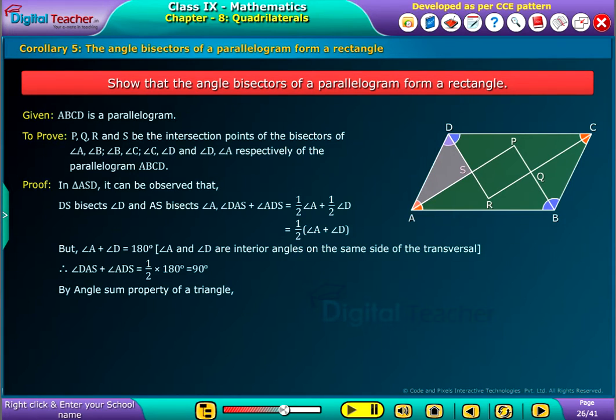By angle sum property of a triangle, angle DAS plus angle ADS plus angle DSA equal to 180 degrees. That implies 90 degrees plus angle DSA equal to 180 degrees. That implies angle DSA equal to 90 degrees.